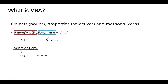In Excel-based VBA, an object might be Range("A1:C5") — the cells from A1 to C5. A property of those cells could be the font, and the name of the font is a property of the font, so properties can have sub-properties. For example: Range("A1:C5").Font.Name = "Arial" would find that range, look at the font, and change its name to Arial.